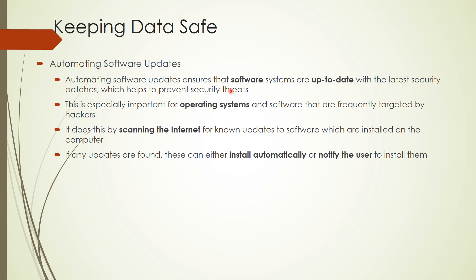You can automate software updates. Automating software updates ensures that software systems are up-to-date with the latest security patches, which helps prevent security threats. This is especially important for operating systems and software frequently targeted by hackers. It scans for new updates to installed software; if any updates are found they can install automatically or notify the user. Make sure your system and all software are always up-to-date — this is how you keep your data safe.